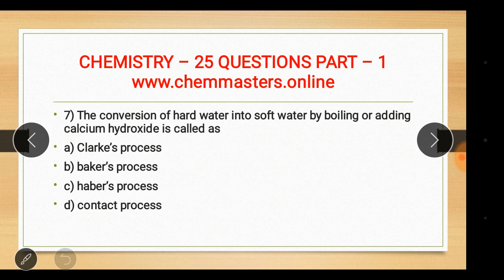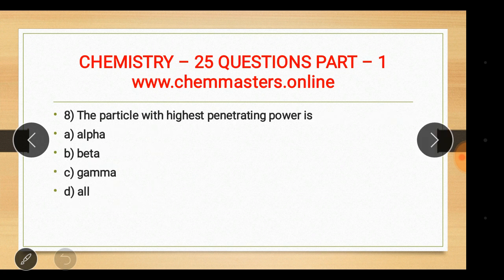Question seven: the conversion of hard water into soft water by boiling or adding calcium hydroxide is called Clark's process. The other options — Baker's process, Haber's process, and contact process — are used in different industrial contexts.